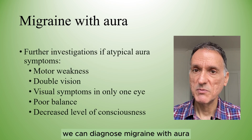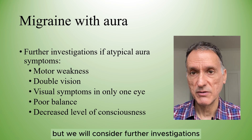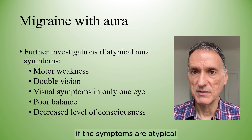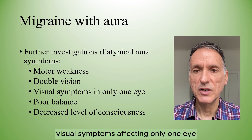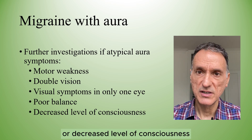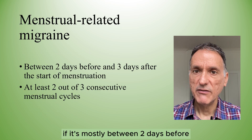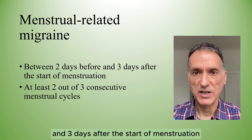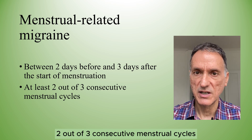We can diagnose migraine with aura if typical aura symptoms are present, but we will consider further investigations and referral if the symptoms are atypical, such as motor weakness, double vision, visual symptoms affecting only one eye, poor balance or decreased level of consciousness. We will suspect menstrual-related migraine if it occurs mostly between two days before and three days after the start of menstruation in at least two out of three consecutive menstrual cycles.